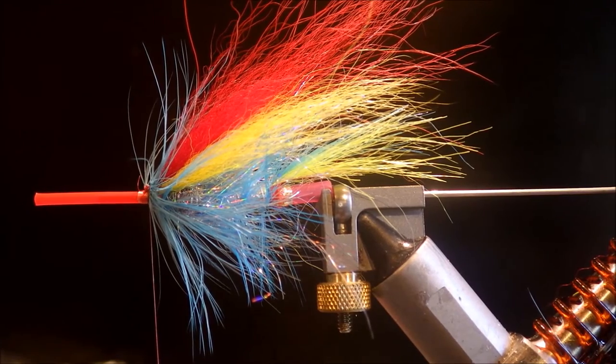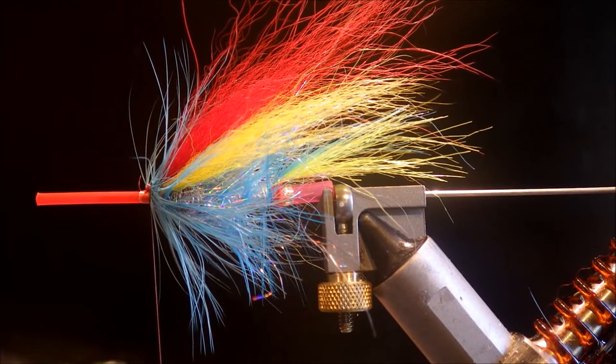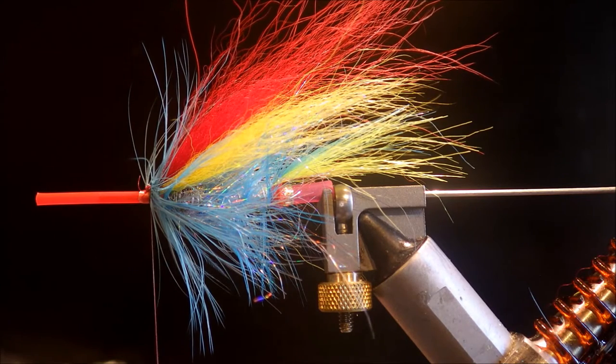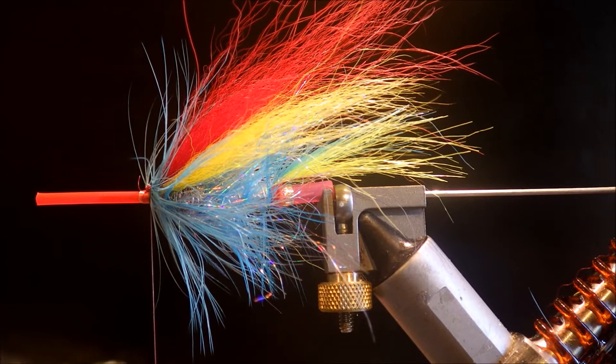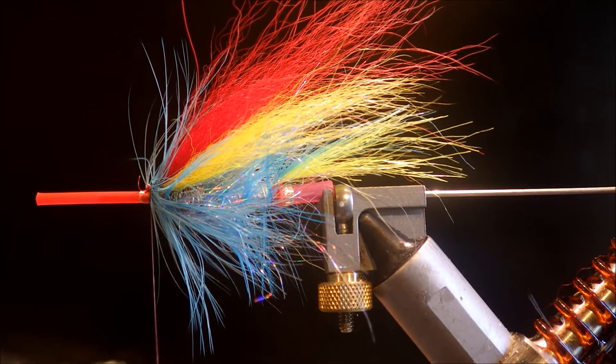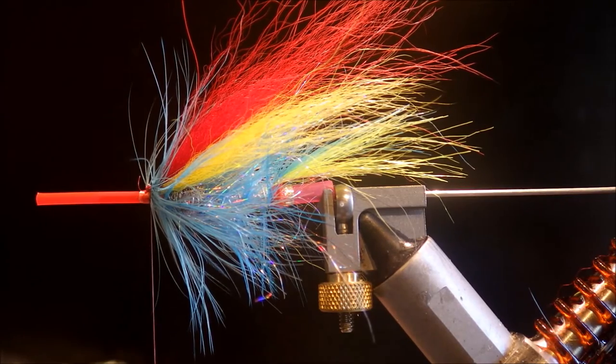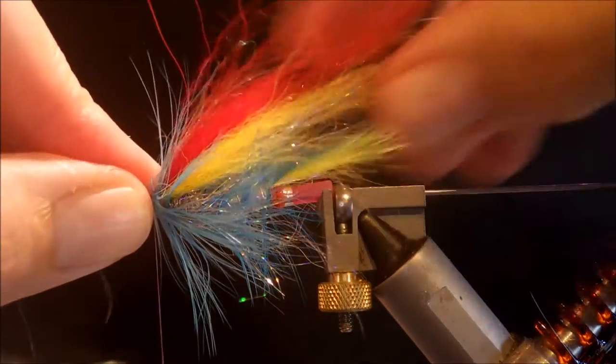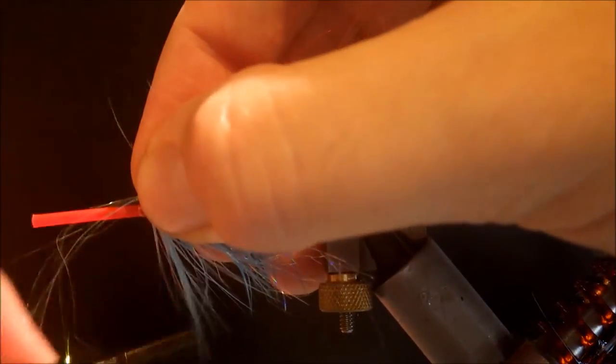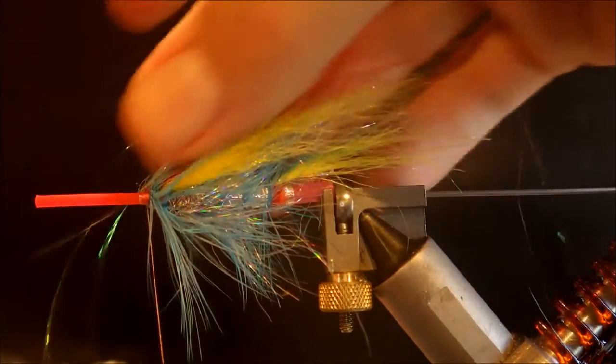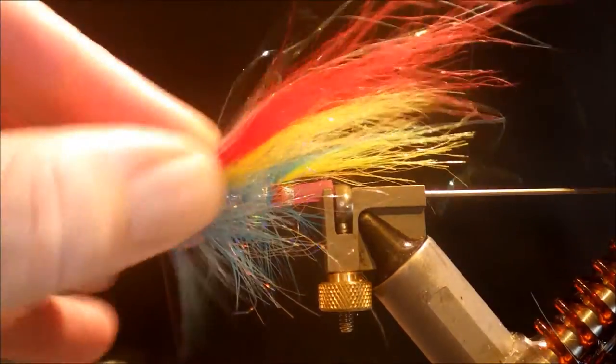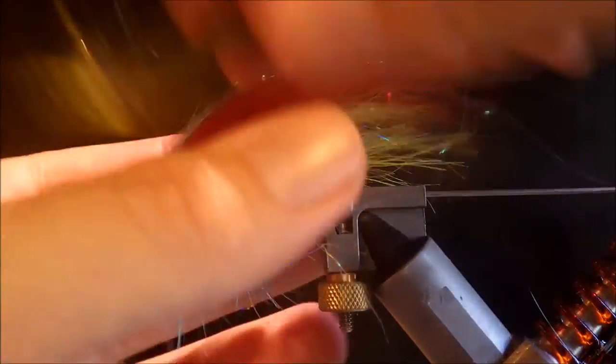So the next part of the wing is some orange. I'm actually using sea foam green, that's a nice sort of pale, pearly blue. Same again, just a few strands, slightly longer than the red fox. Fold them over. Get a brush.